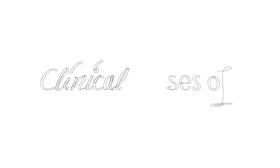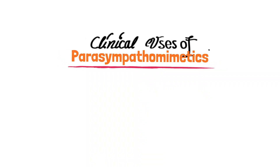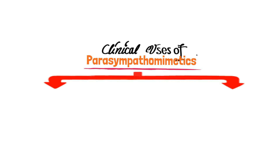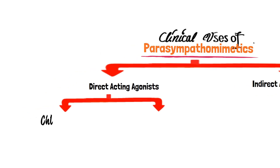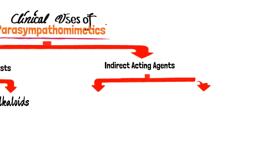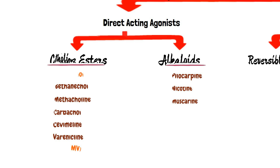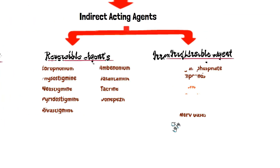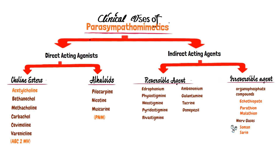In this video, we will discuss the clinical uses of indirect-acting parasympathomimetics. Parasympathomimetics are classified as direct-acting agonists and indirect-acting agonists. Direct-acting agonists are further divided into choline esters and alkaloids, while indirect-acting agonists or anticholinesterases are classified as reversible agents and irreversible agents. That is the classification from the last video. In the previous video, we discussed the classification briefly and clinical uses of direct-acting parasympathomimetics, while this video will be all about the clinical uses of indirect-acting parasympathomimetics.